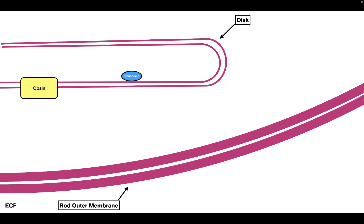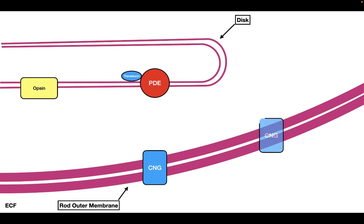Now let's talk about what transducin does. Transducin is going to interact with a specific protein called phosphodiesterase. But before we talk about phosphodiesterase, I want to talk about what happens to the rod cell when it's in darkness. When the rod cell is in darkness, you have a specific channel called the CNG channel open. The CNG channel, or the cyclic nucleotide gated channels, are going to open in response to cyclic GMP. Cyclic GMP inside the rod cell is going to be formed by an enzyme that is always on or activated, and this enzyme is called guanylate cyclase.